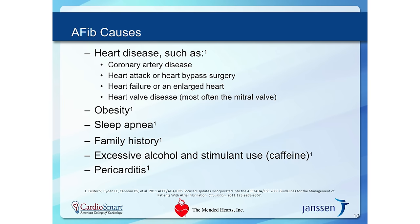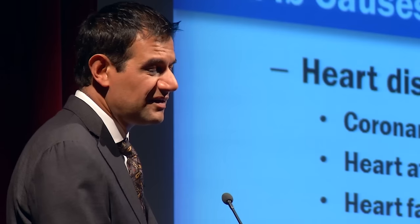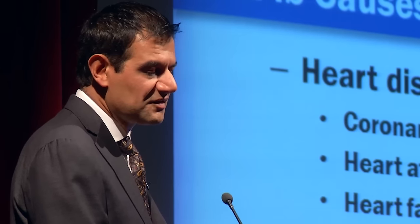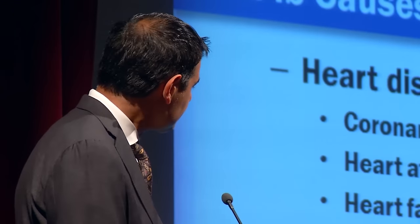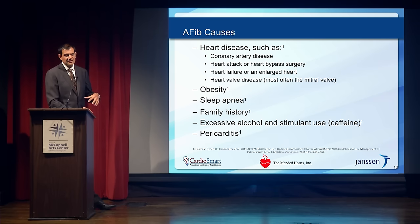Atrial fib is just one type of heart condition, and unfortunately in many patients these can exist together. For example, someone with high blood pressure for many years may develop strain on the electrical system that causes atrial fibrillation. Similarly, after a heart attack, because the heart is weakened, there can be strain on the electrical system that leads to the same condition. When we diagnose atrial fib, we look for these other conditions, because sometimes the best way to treat it is to treat whatever is causing it.